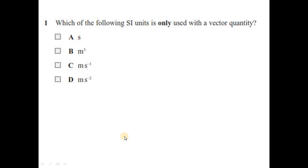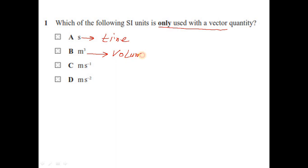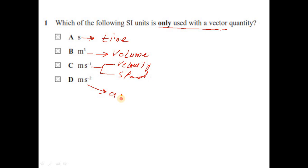Question one: which of the following SI units is only used with a vector quantity? Looking at the options, second is for time (scalar), meter cubed is volume (scalar), meter per second can be used for velocity but also speed (scalar). Meter per second squared is the unit of acceleration, which is a vector quantity, so the answer is option B.